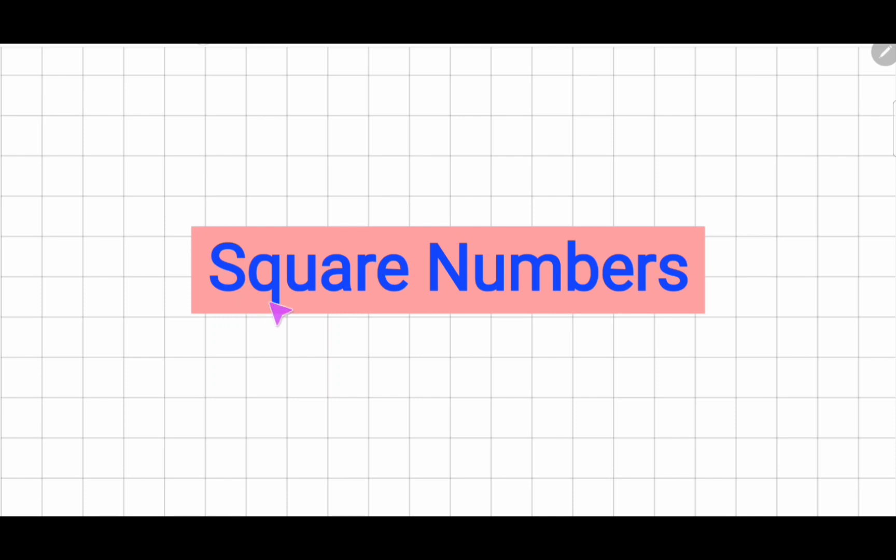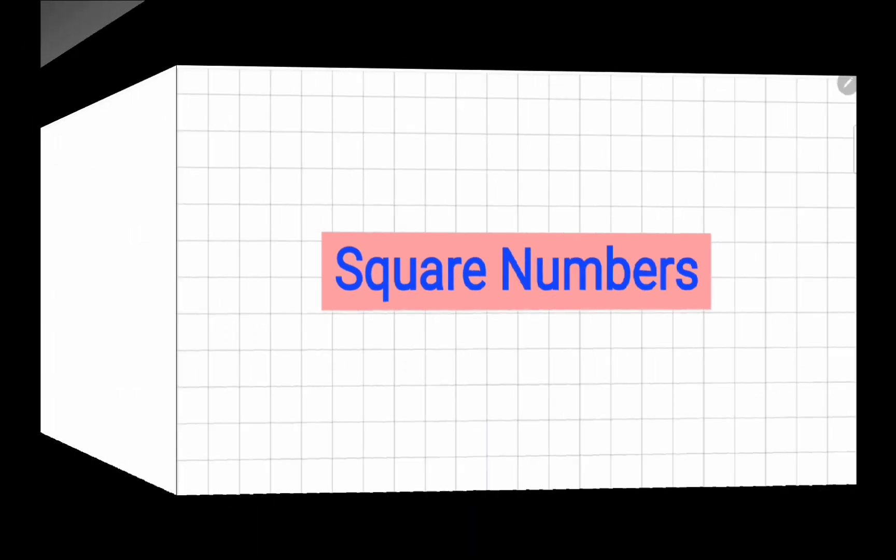Hi! Let's learn about the square numbers. A square number is a number that can be made into a square by using that same number of smaller squares.